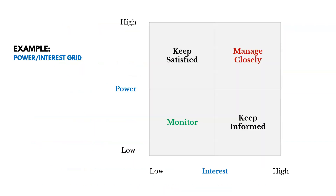Here's an example of the power and interest grid. On the y-axis you'll see power — their level of authority — and on the x-axis you'll see interest — how concerned they are about the outcomes of the project. If someone has a lot of power and is very interested in the outcomes, they'll be in the top right corner, and we want to manage those stakeholders closely. If they have low authority and low interest, they'll be in the bottom left corner — we just monitor those relationships and don't need to manage them as closely.